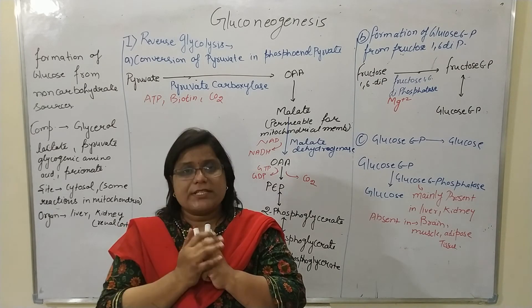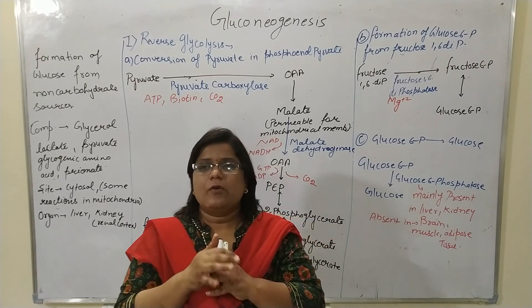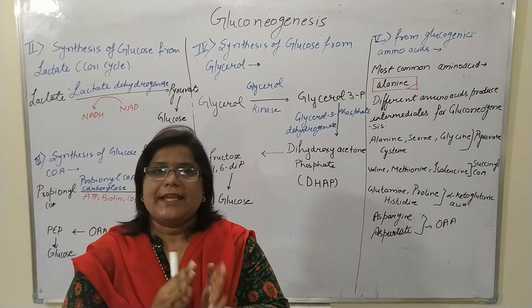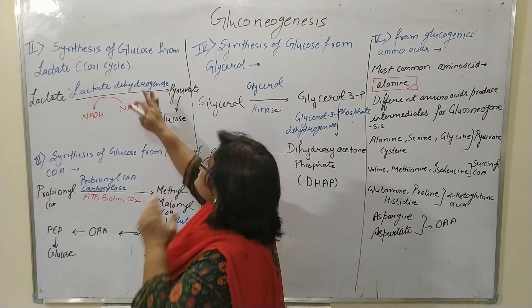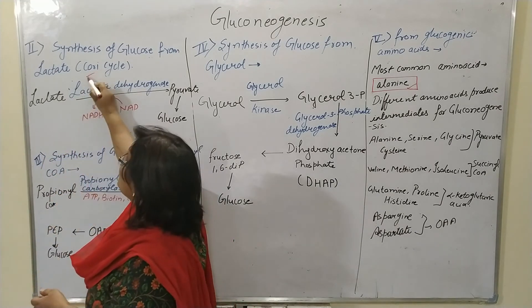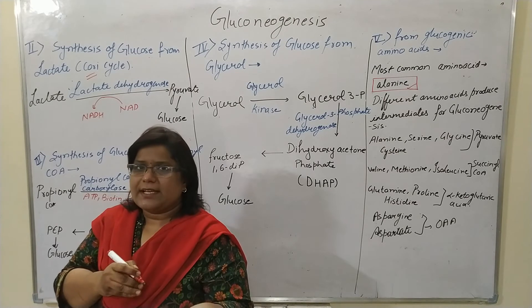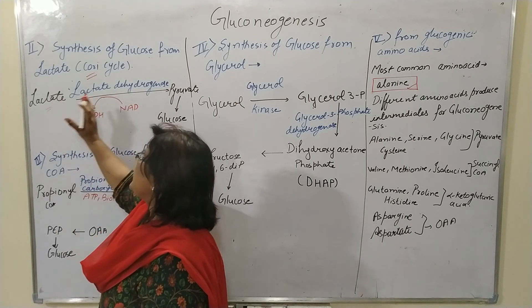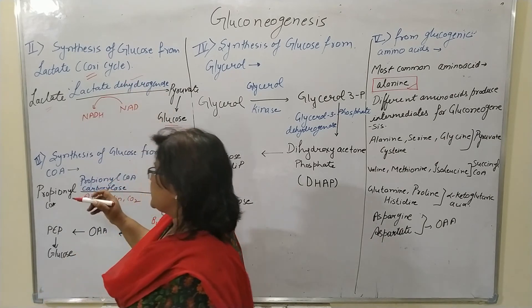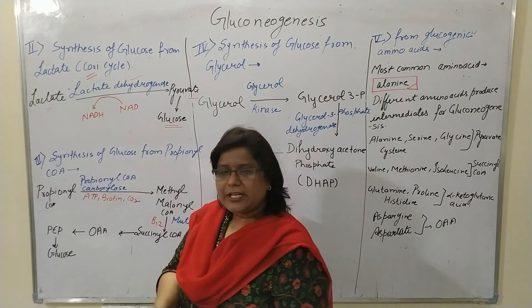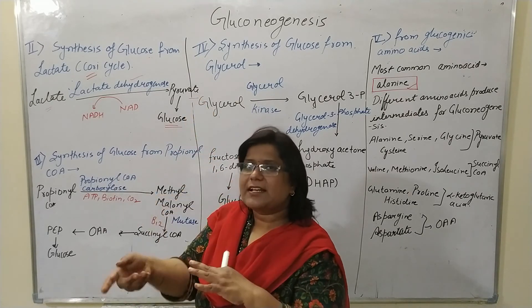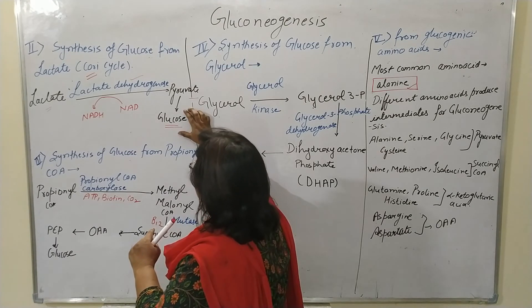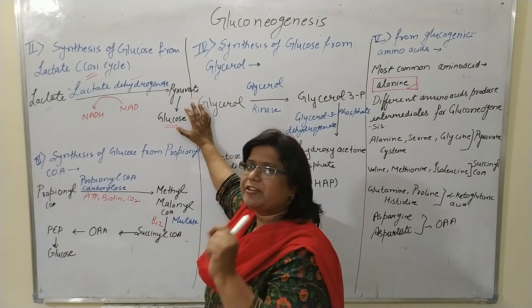Now we will discuss the Cori cycle — glucose generation from lactate — and also glucose generation from glycerol and glucogenic amino acids. In the Cori cycle, glucose is generated from lactate. Lactate is converted into pyruvate with the help of lactate dehydrogenase, and this pyruvate is then converted into glucose via reverse glycolysis.